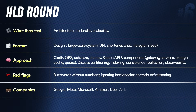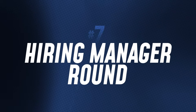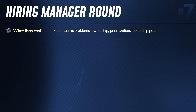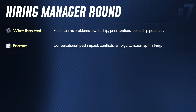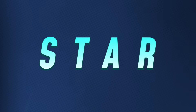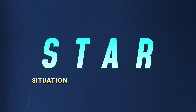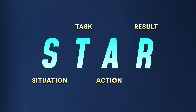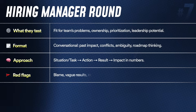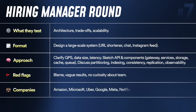HLD is asked in almost every mid-to-senior level engineering interview, and Google, Meta, and Microsoft all have a system design round from SDE-3 onwards. The seventh type is the hiring manager round, where the manager tests whether you'll be a good fit for the team and project. They ask about your past, conflicts you've faced, and situations you've handled. Use the STAR framework — Situation, Task, Action, and Result. Don't blame others, be clear on the outcomes you drove, and show curiosity about the work you'll be given. Amazon's leadership round is a good example.